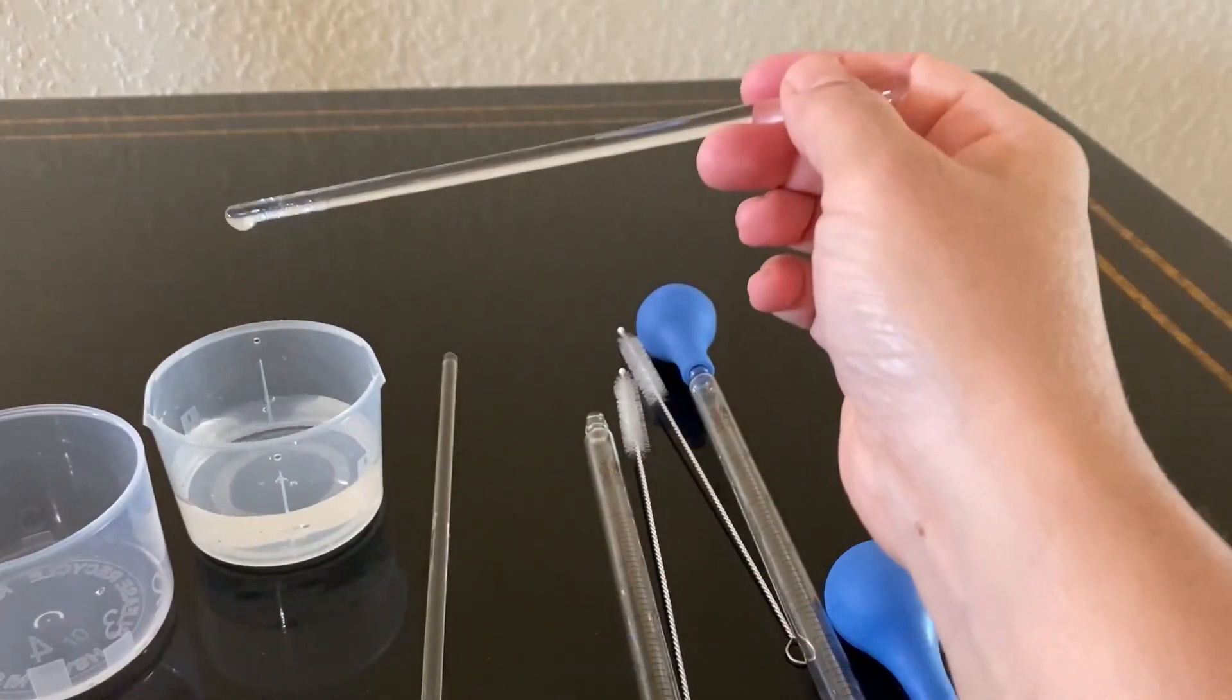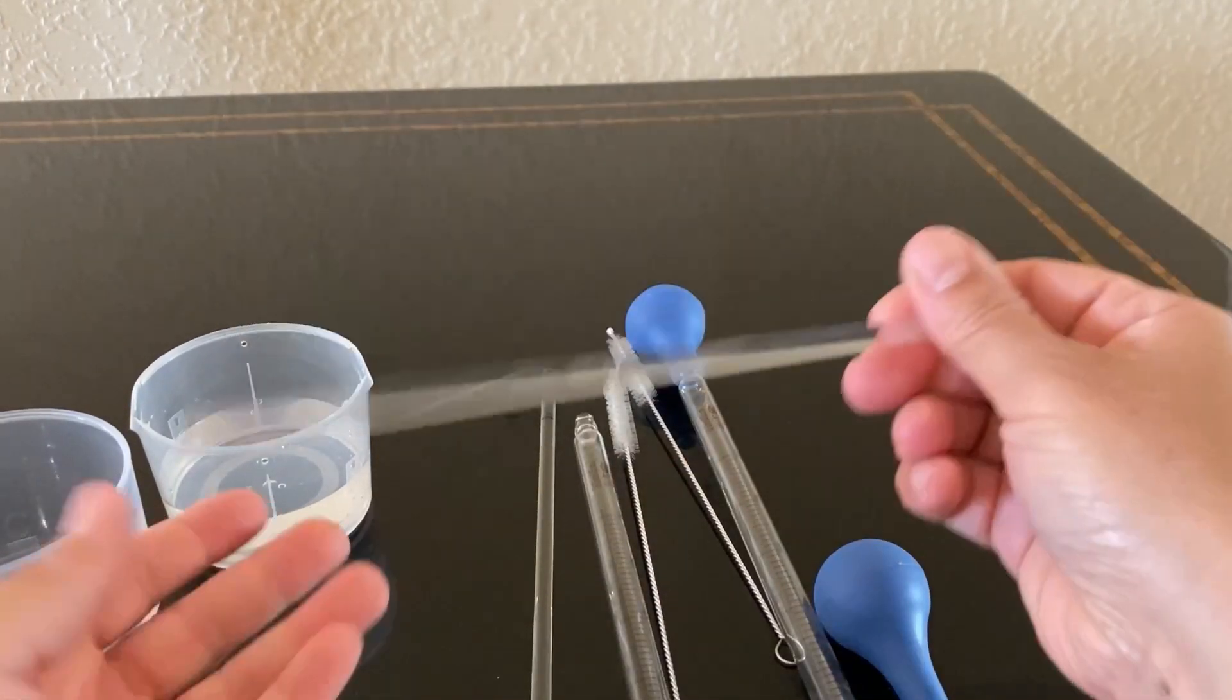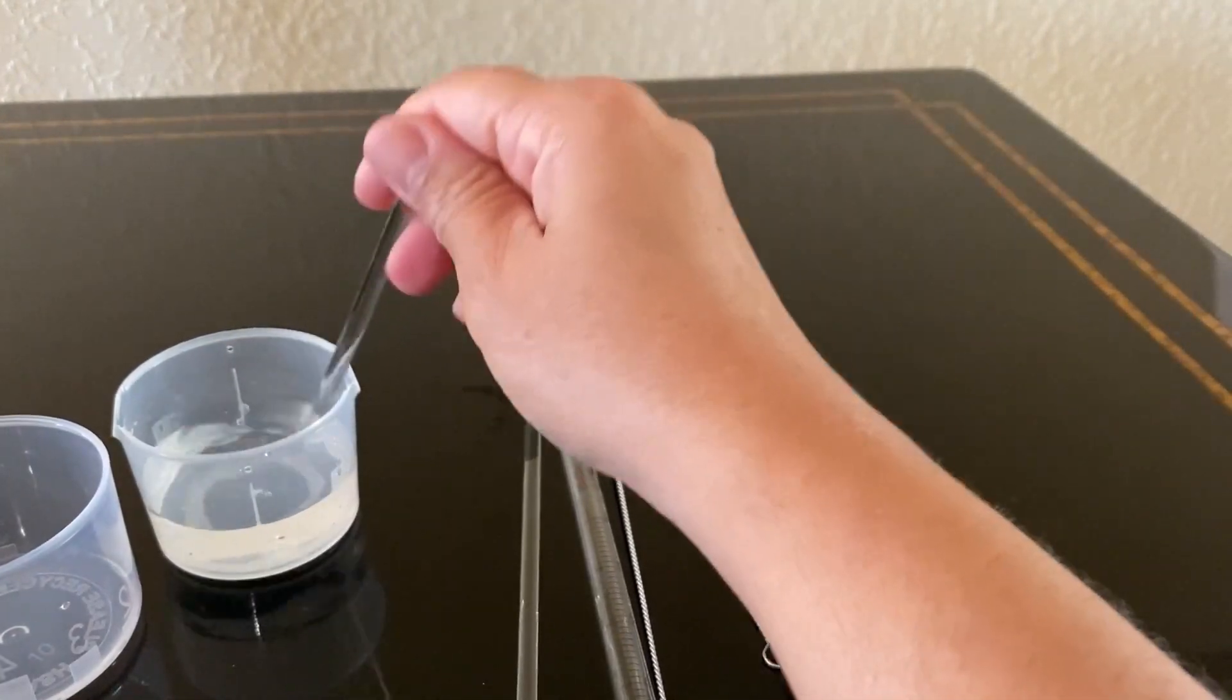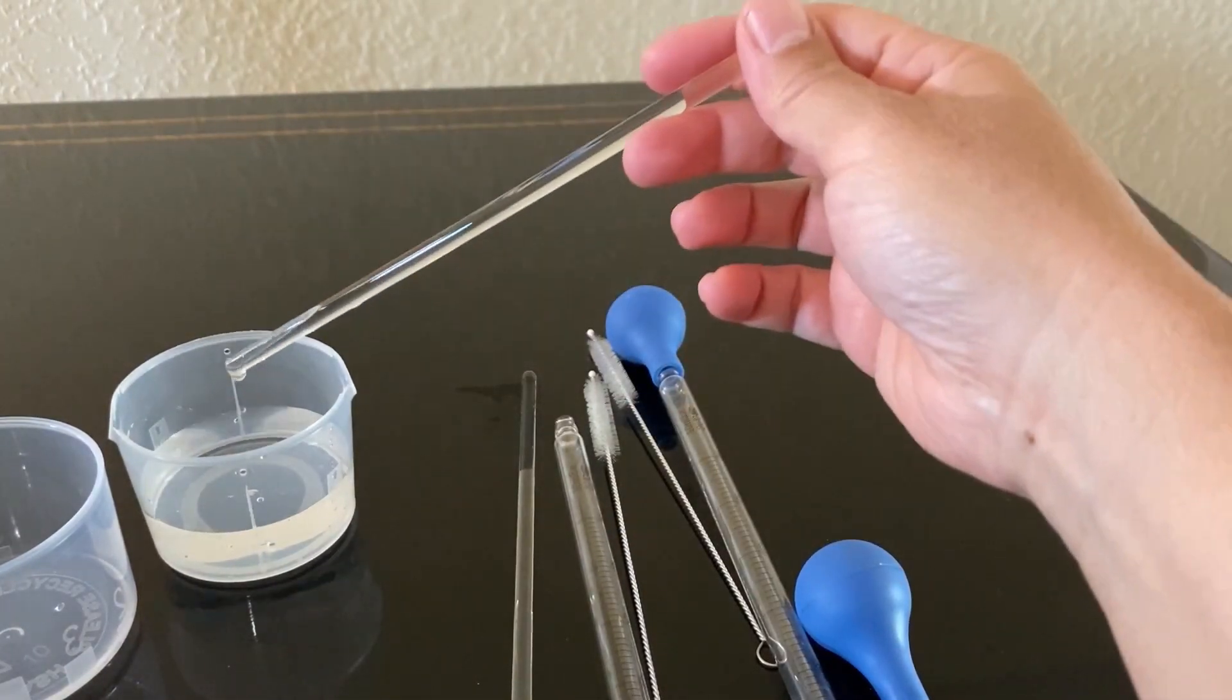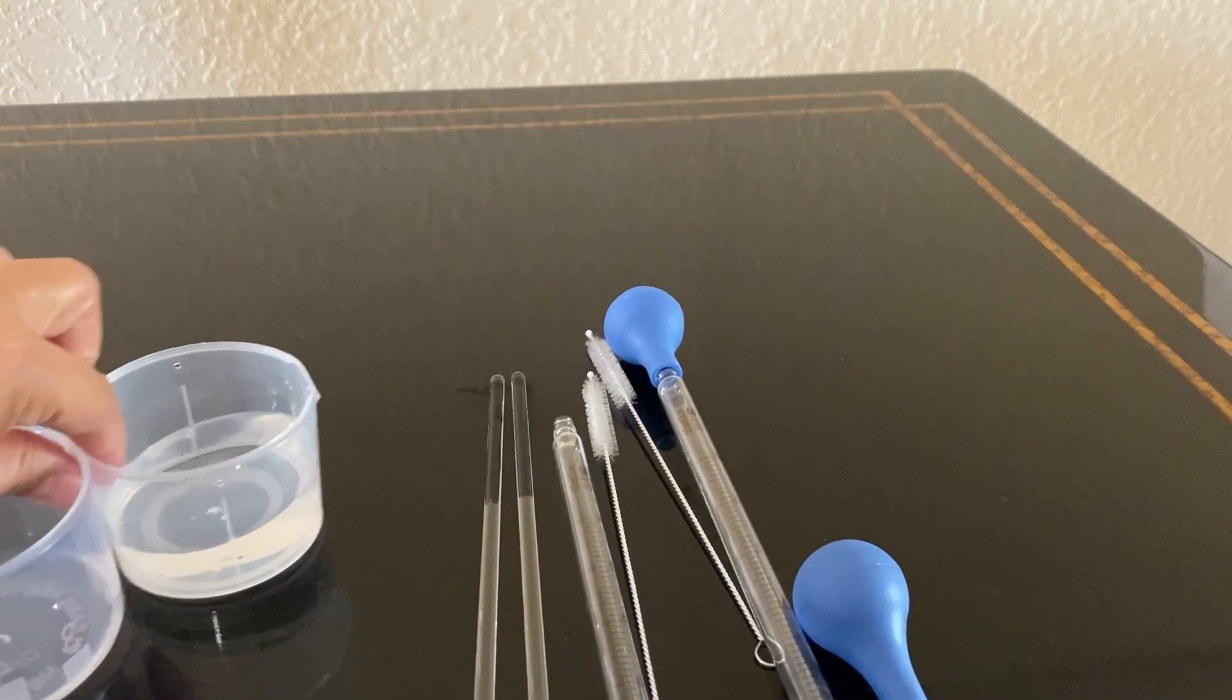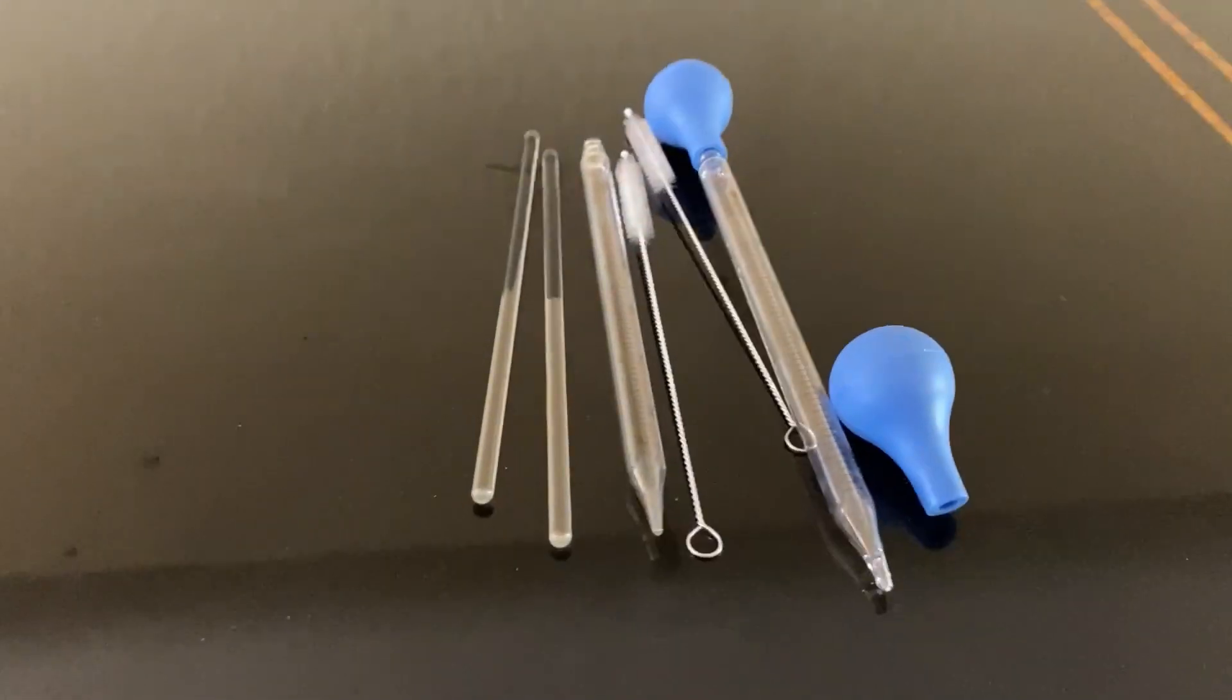This glass pipette dropper set is extremely well made from high-quality material. It's a versatile solution for transferring and measuring liquids. The clear markings, leak-proof design, and cleaning brush make it easy and a valuable tool for anyone who works with essential oils or other precise liquid measurements. Hope you like my review, thank you.